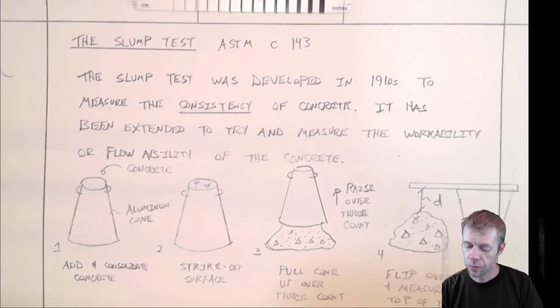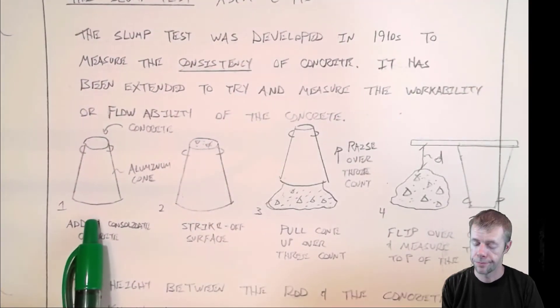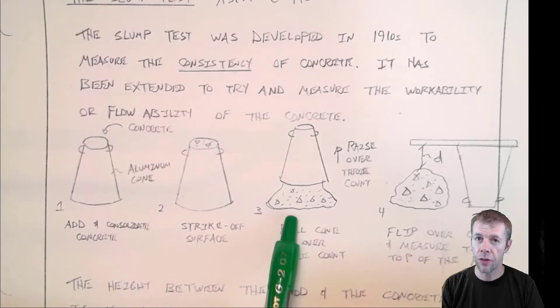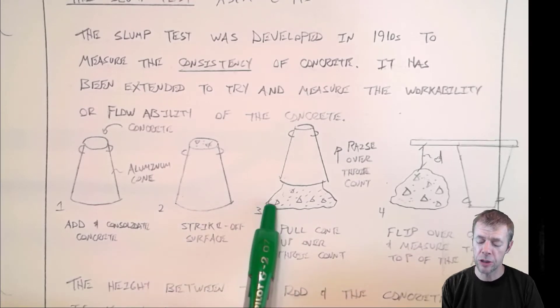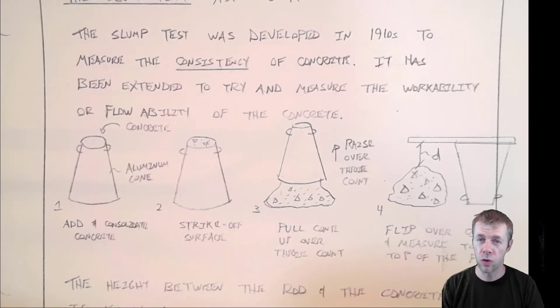So how does it work? Well, we have a cone made out of aluminum. We add concrete to the top of the cone. Then you strike off the surface and then you pull or raise the cone over a three count. And as it does, the concrete falls out the bottom, or actually as you pull the form away, then it's no longer holding it up. And so the concrete starts to move.